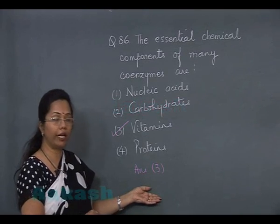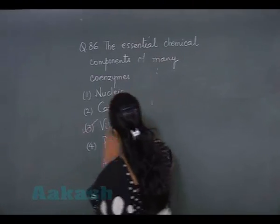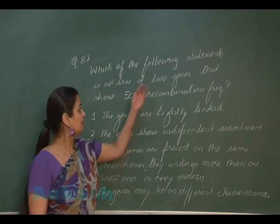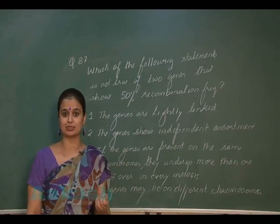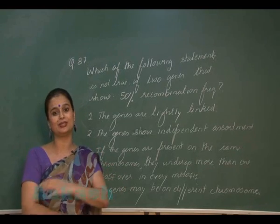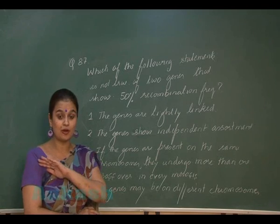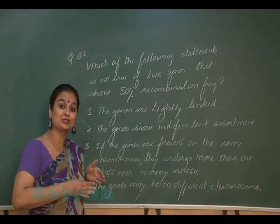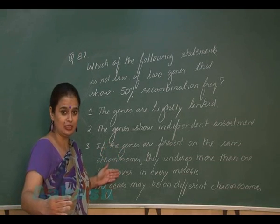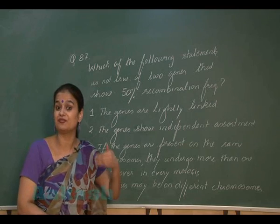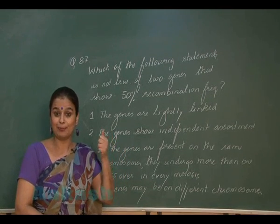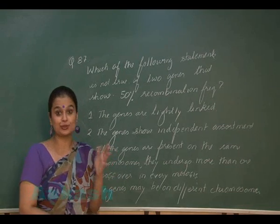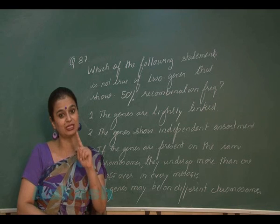In question number 87, we have to find the incorrect statement when two genes show 50% recombination frequency. Fifty percent recombination frequency can occur when genes are present on different chromosomes — they are not linked and show independent assortment. It can also occur when genes are on the same chromosome but present distantly, giving high recombination frequency due to crossing over. However, if genes are on the same chromosome and close enough, crossing over is absent.